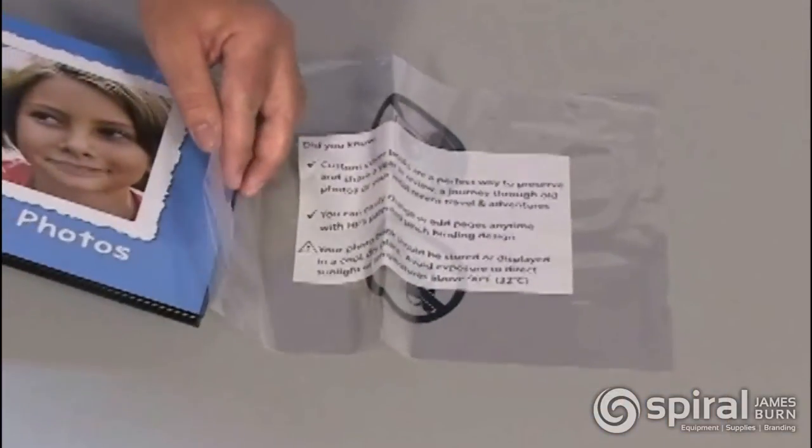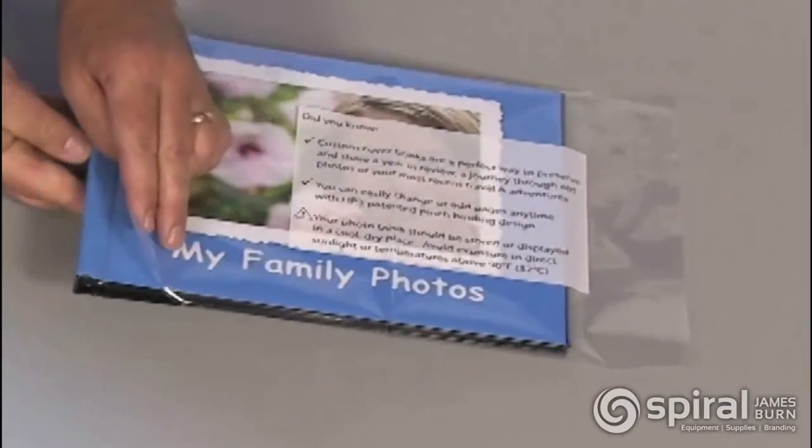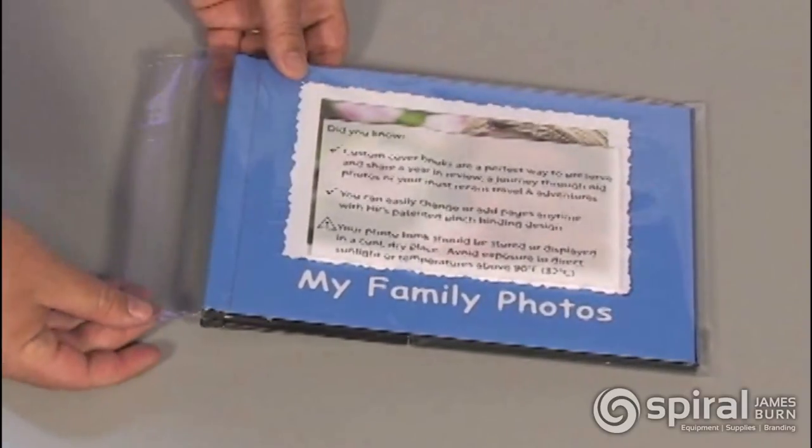Package the book. Place the book into the plastic photo book bag to protect it. Make sure the storage instructions on the bag show on the top of the book. Do not cover the instructions on the bag with the sales bar code sticker.